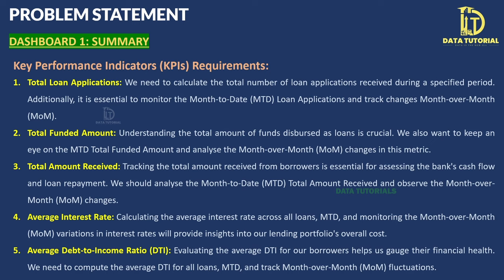For each dashboard there is a different problem statement. The first dashboard is the summary dashboard for analyzing key performance indicators. The first KPI the client wants is total loan applications — the total number received during a period — along with month-to-date applications and month-over-month (MoM) growth showing percentage increase or decrease compared to last month.